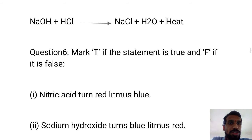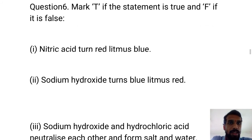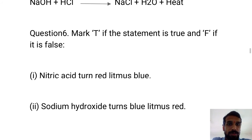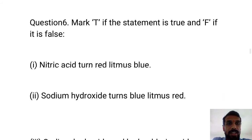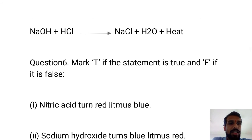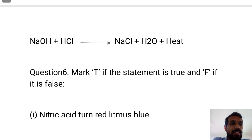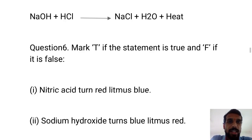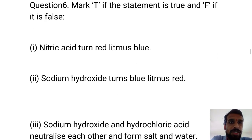Question 6 is True and False. First: Nitric acid turns red litmus blue. That is false — acids do not turn red to blue. Red will remain red; blue will turn to red for acids. Nitric acid is an acid, so the first statement is false.